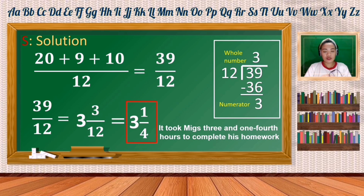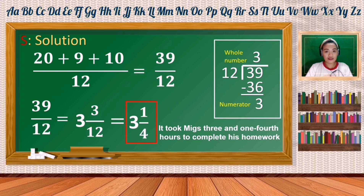It took Migs 3 and 1/4 hours to complete his homework. Now let us proceed to the second example.